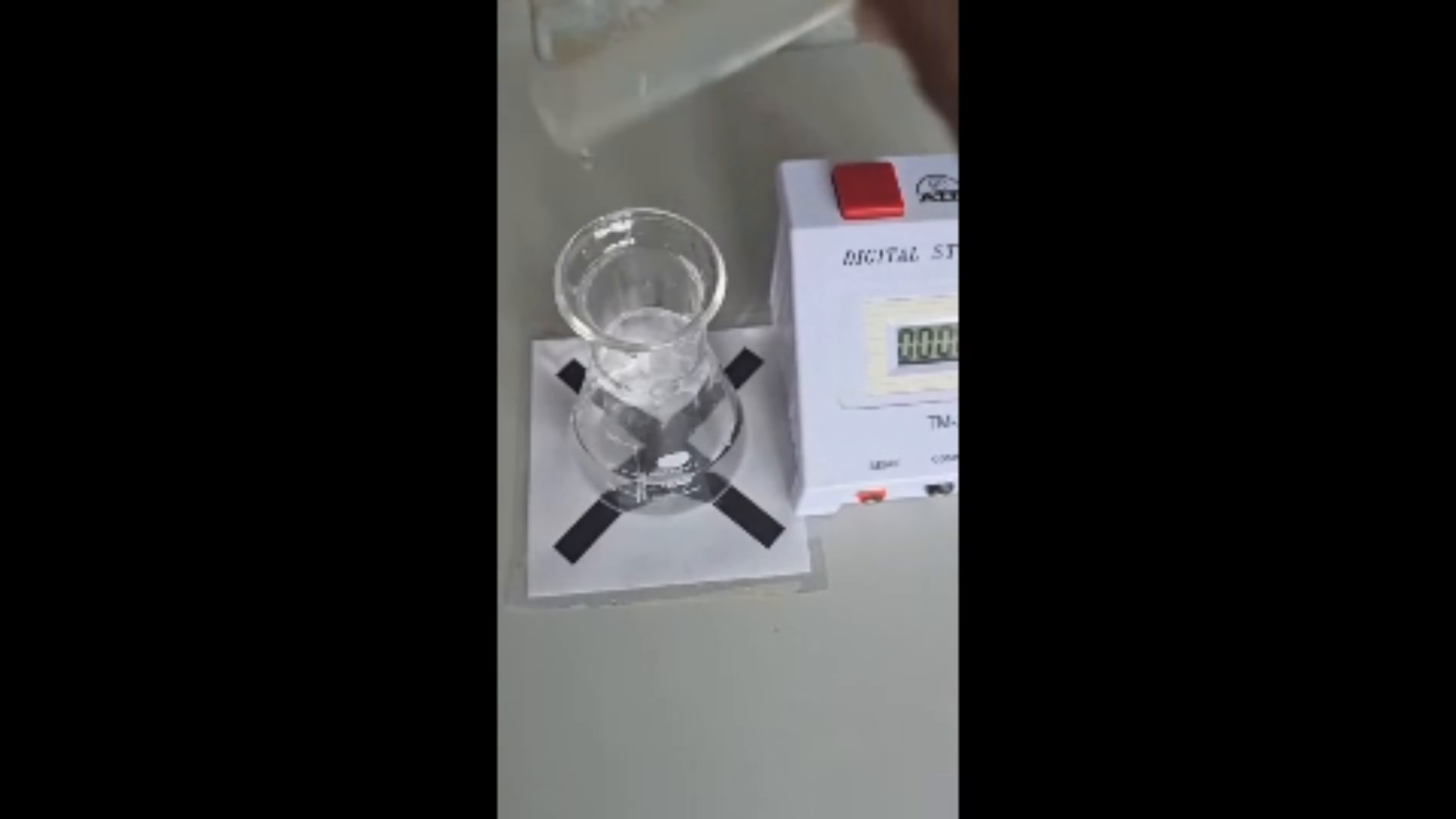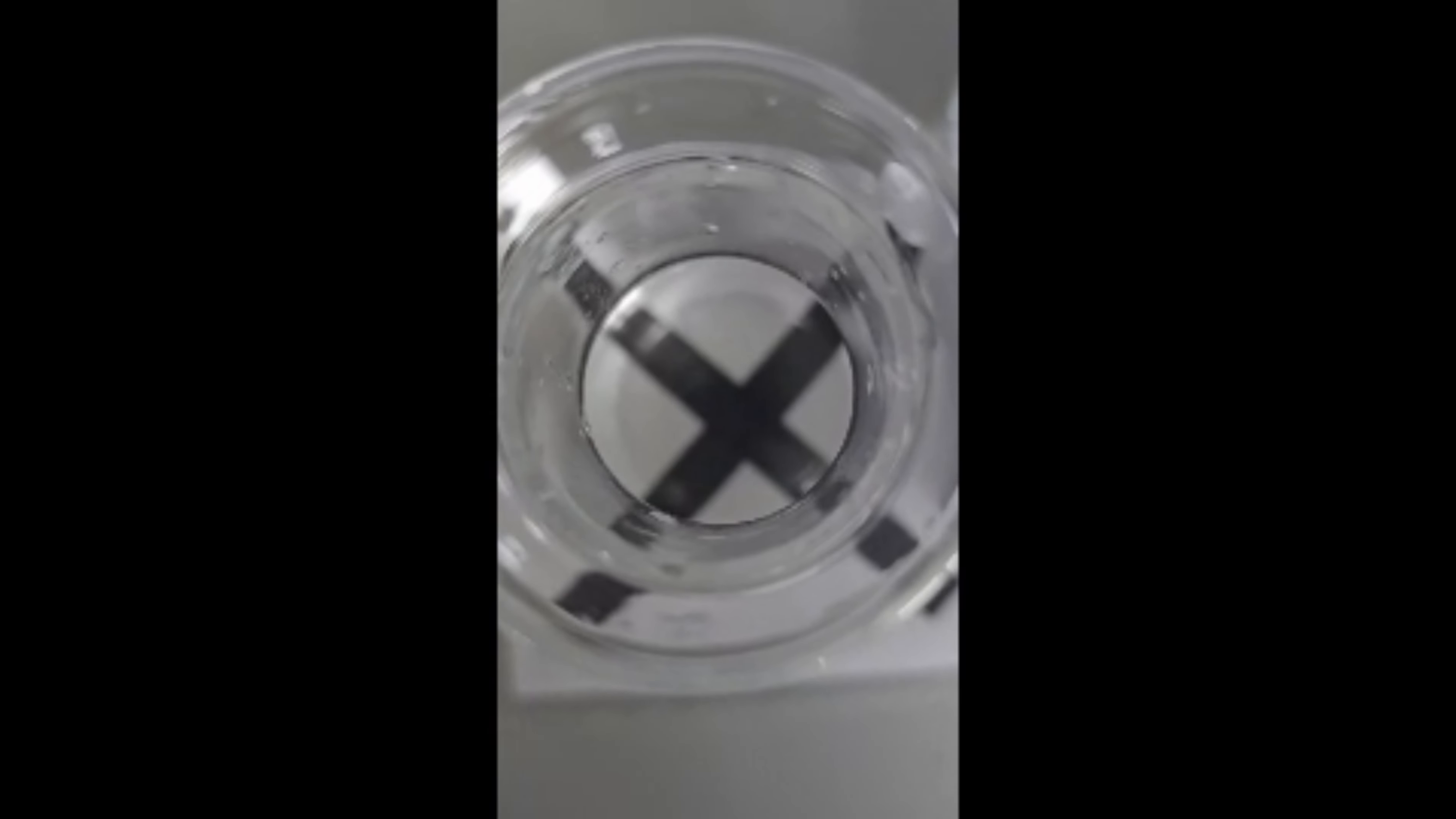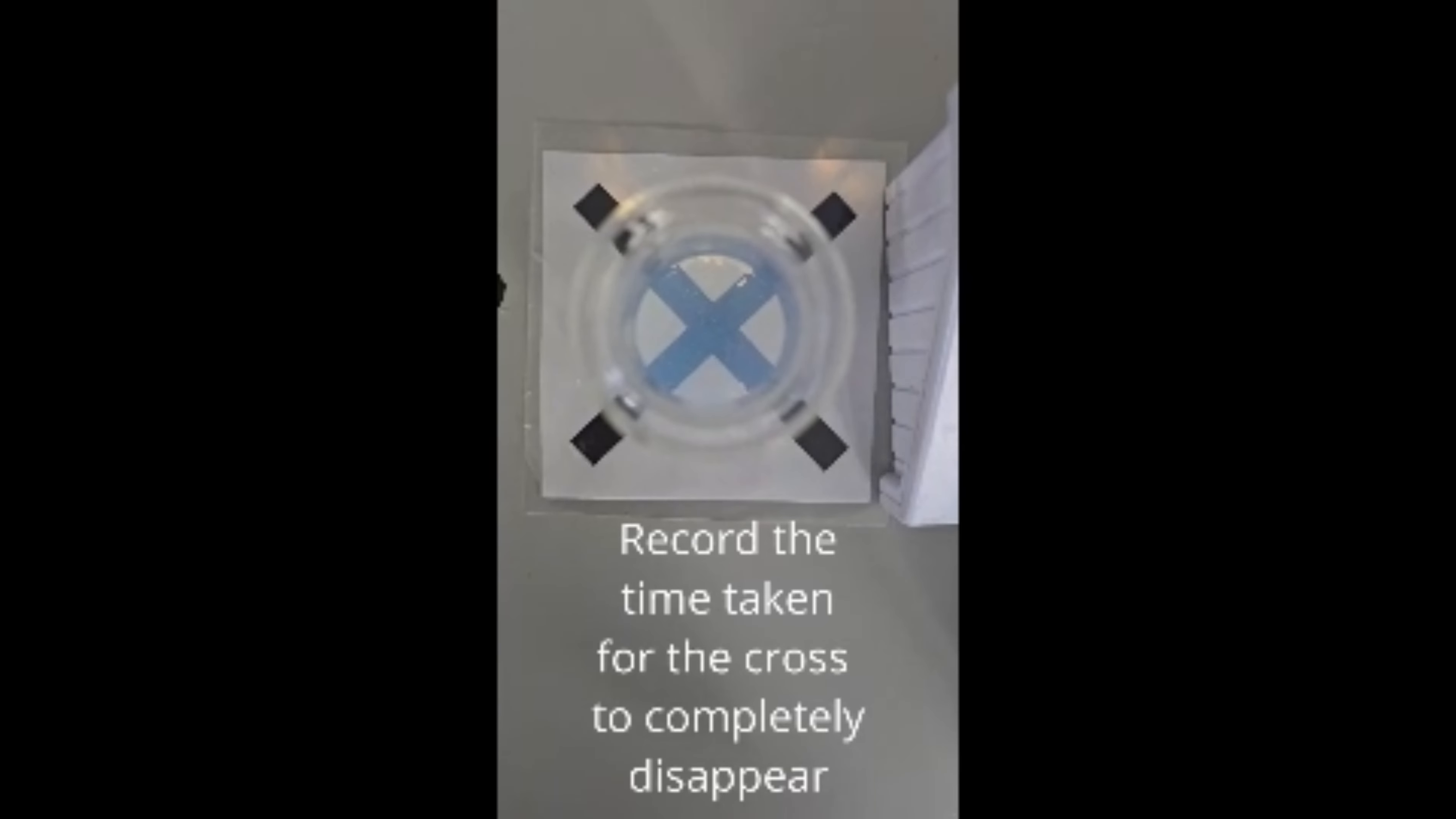Place an X and place the conical flask on top of the X. Get your stop clock ready and transfer the hydrochloric acid quickly, pressing the stop clock. You must watch over the conical flask until you see the X completely disappear.